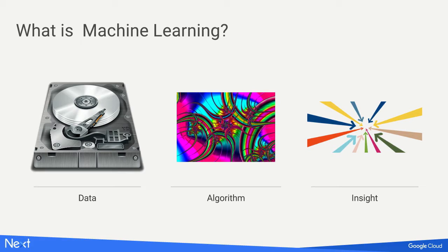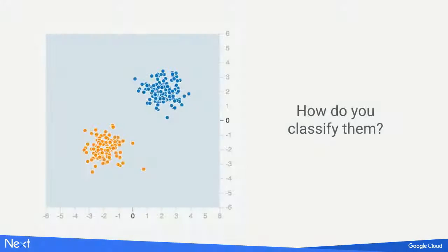Machine learning is all about data and how to have predictive insight from data by using machine learning algorithms. Rather than scanning all past data, you want to predict the future based on historical data. To do that, you use machine learning algorithms, which represent a different computing paradigm from existing IT systems. Let me start with an interesting demonstration called Playground to understand the difference between usual IT systems and machine learning.